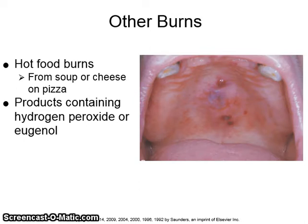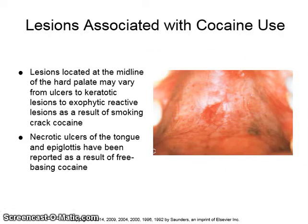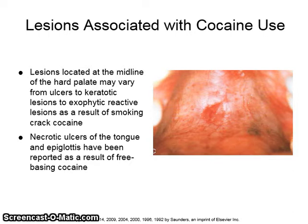Hot foods can burn the palate — usually pizza, hot cheese, soup, or hot coffee — producing the type of lesion seen in the image on the right. Products containing hydrogen peroxide or eugenol can also cause burns. Lesions associated with cocaine use are located in the midline of the hard palate and may vary from ulcers to keratotic lesions to exophytic reactive lesions as a result of smoking crack cocaine. Necrotic ulcers of the tongue and epiglottis have been reported as a result of freebasing cocaine.